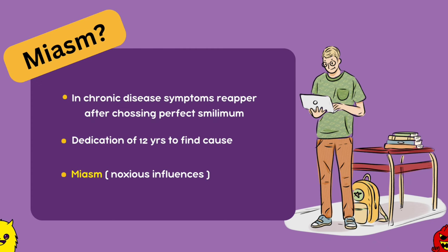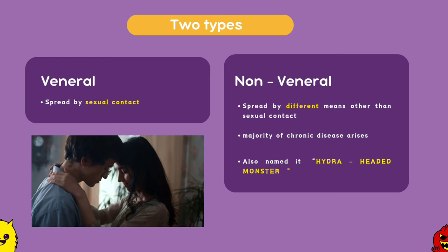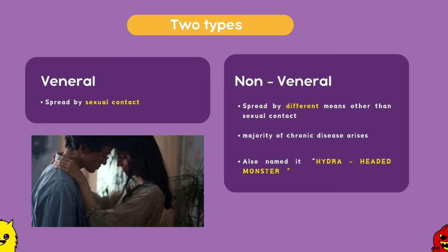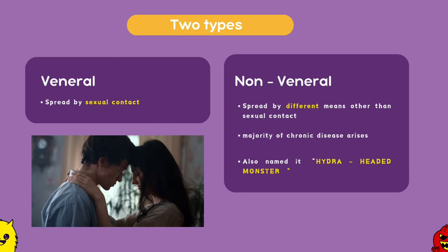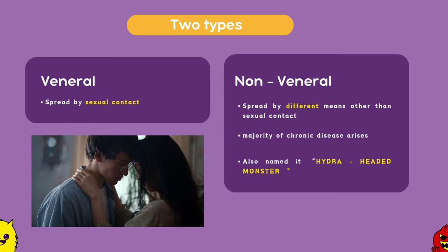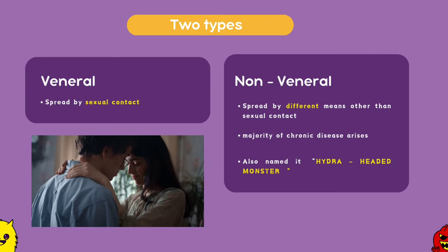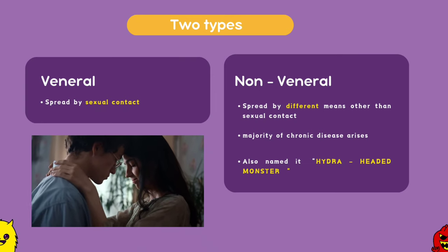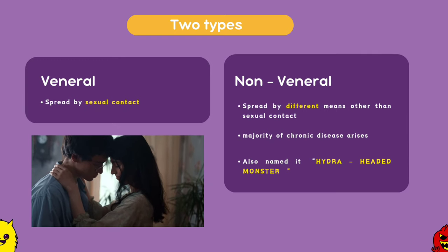He then dedicated around 12 years of his life to find out the cause for it and found that there is something which doesn't allow diseases to get cured completely, and this he named as Miasm, which means noxious influences. During these 12 years, he found that Miasms are basically of two types: venereal and non-venereal. Hahnemann found that the majority of chronic diseases arise from the non-venereal Miasm, that is Psora, and hence he also called it a Hydra-headed monster.